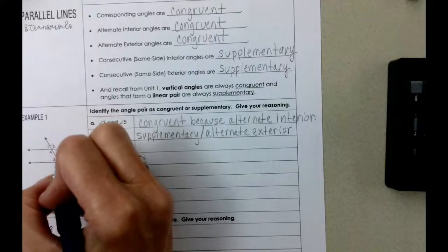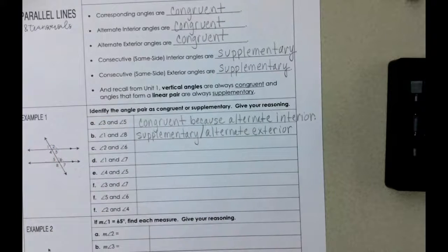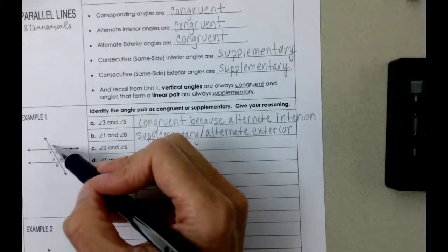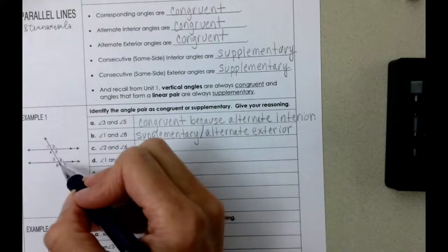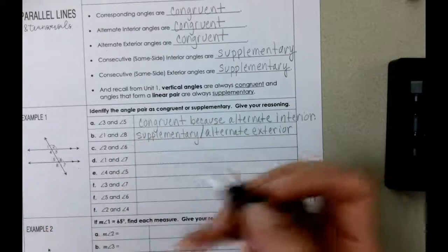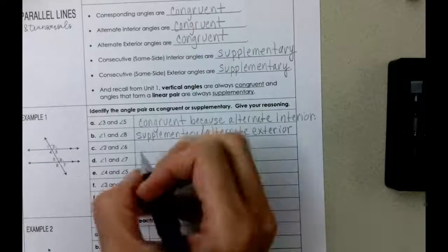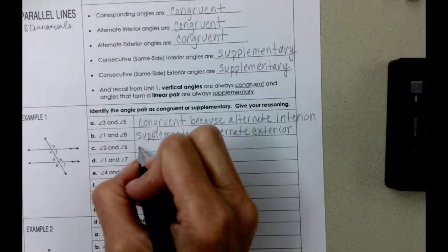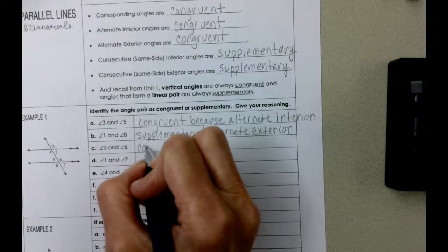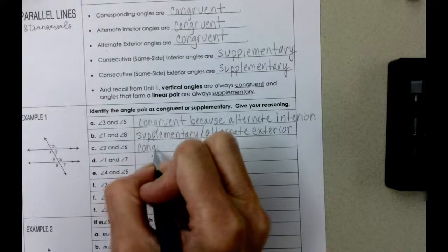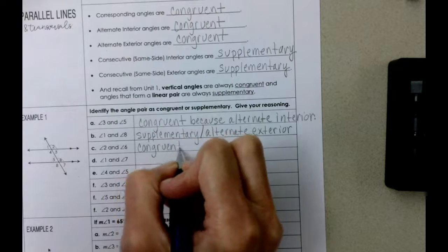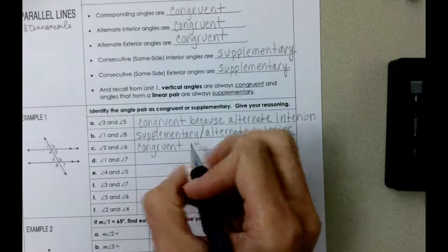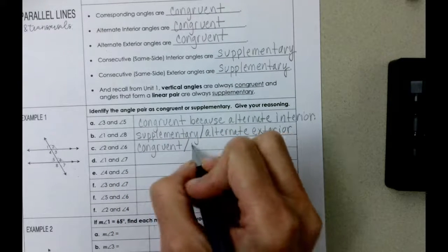Angle 2 and angle 6. Angle 2 is on top of the parallel line and to the right. Angle 6 is on top of the parallel line and to the right, which means that these are congruent angles because they are corresponding.